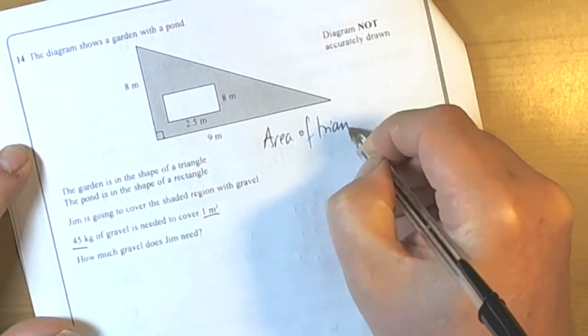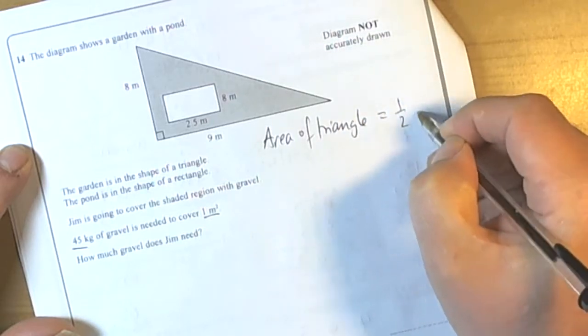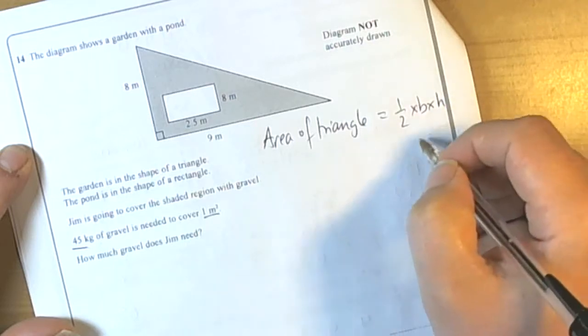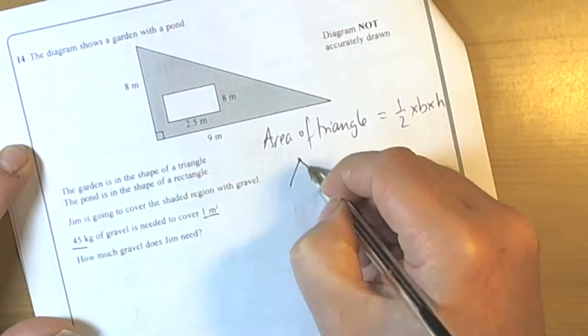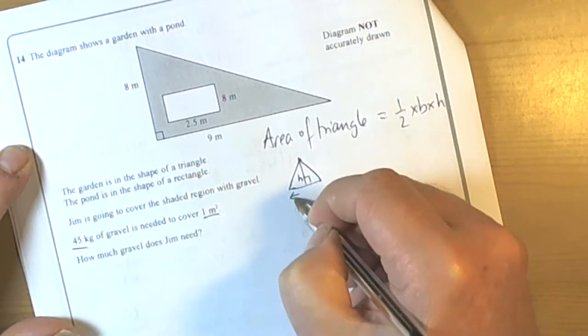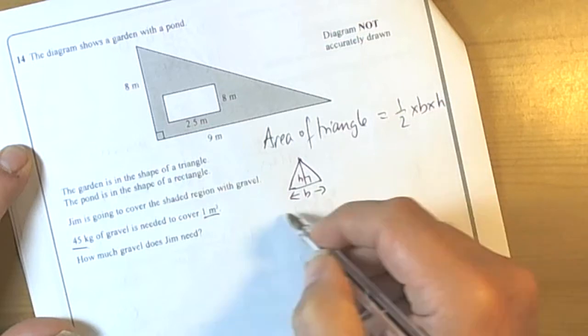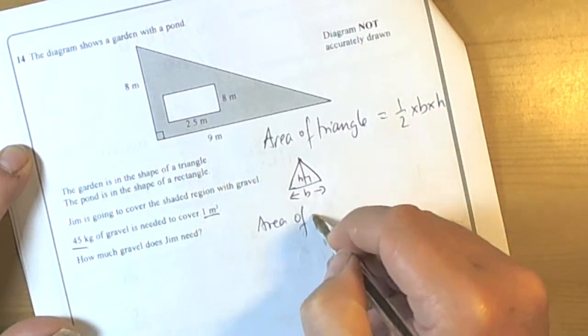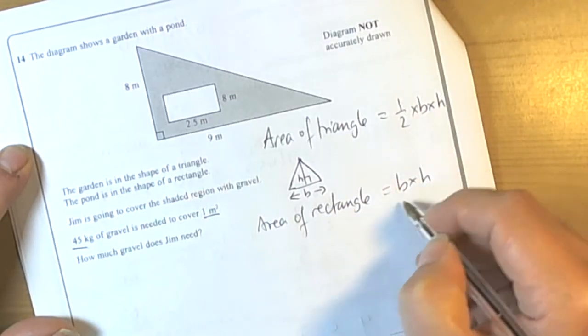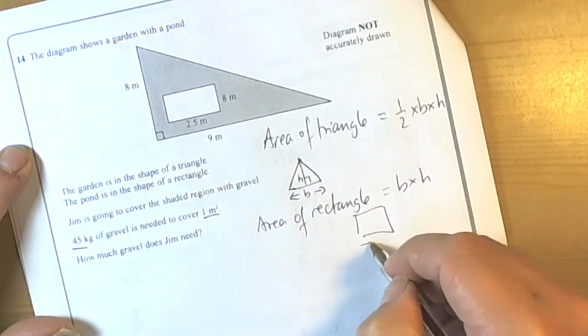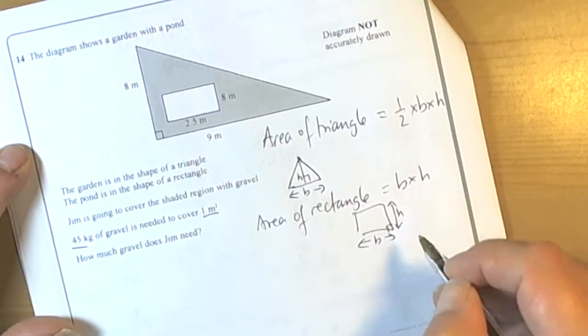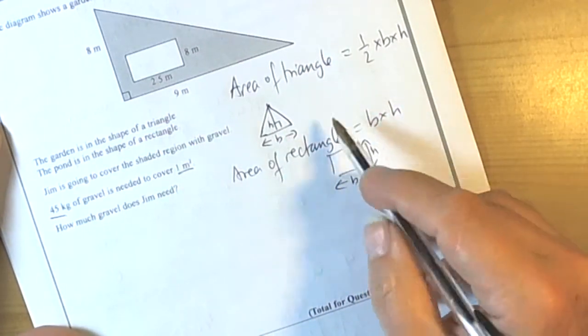Area of a triangle is a half times the base length times the vertical height, the perpendicular height. So again for the standard triangle, the height is always perpendicular to the base length. And the area of a rectangle, base times vertical height. Again we're just measured perpendicularly. So we've got a base length and the right angle and we measure the height. So we're going to use these two formulas then to work out the shaded area.